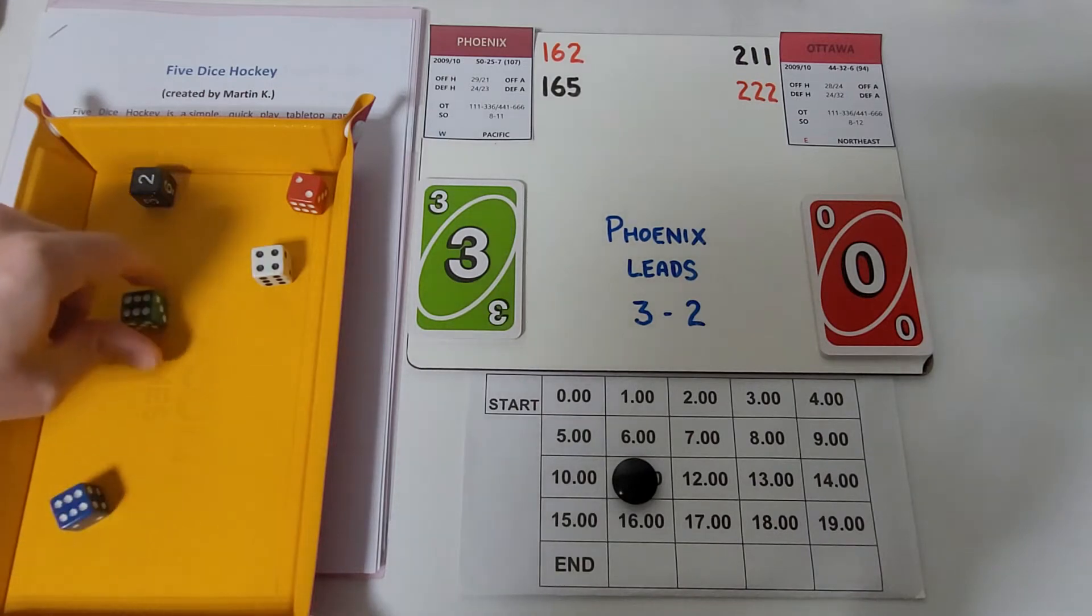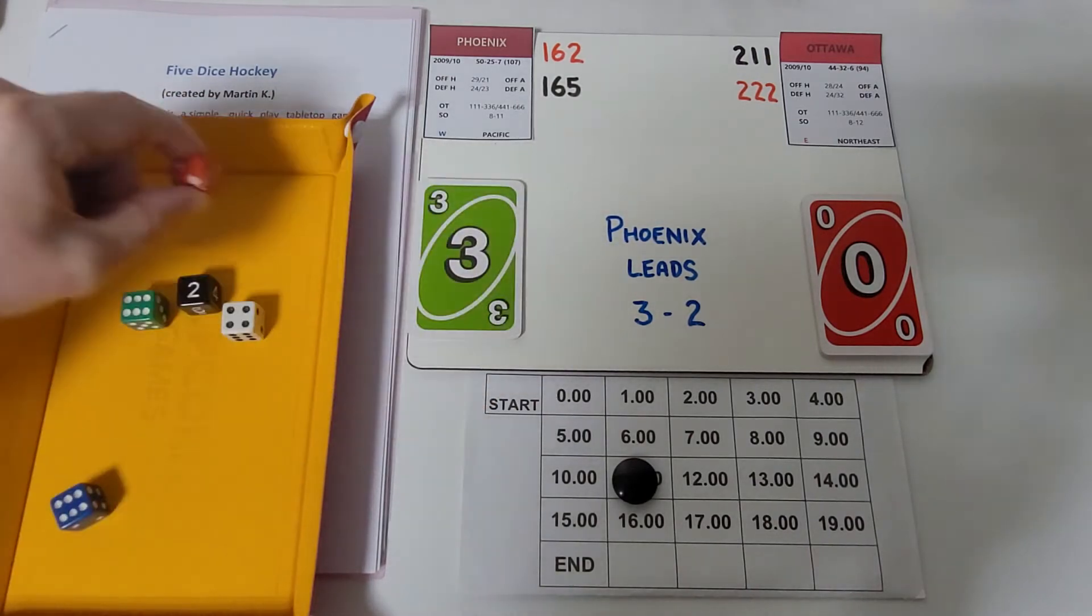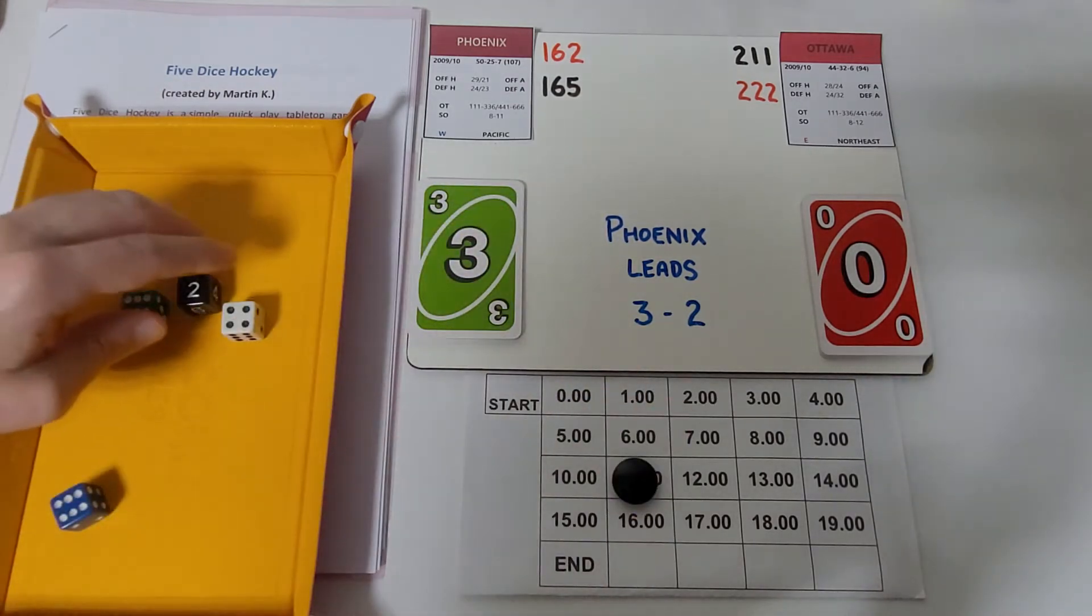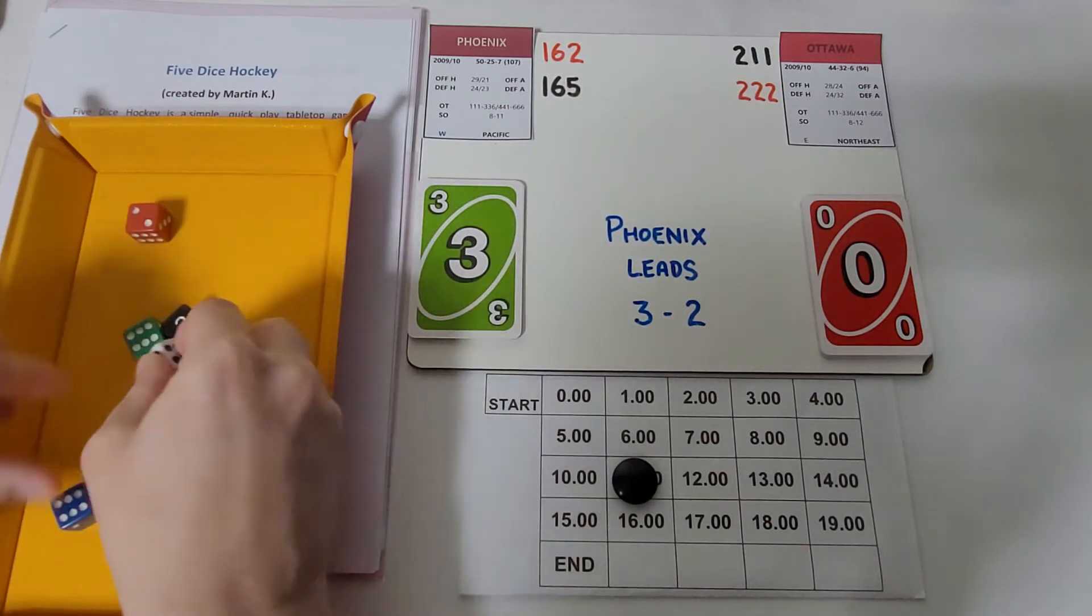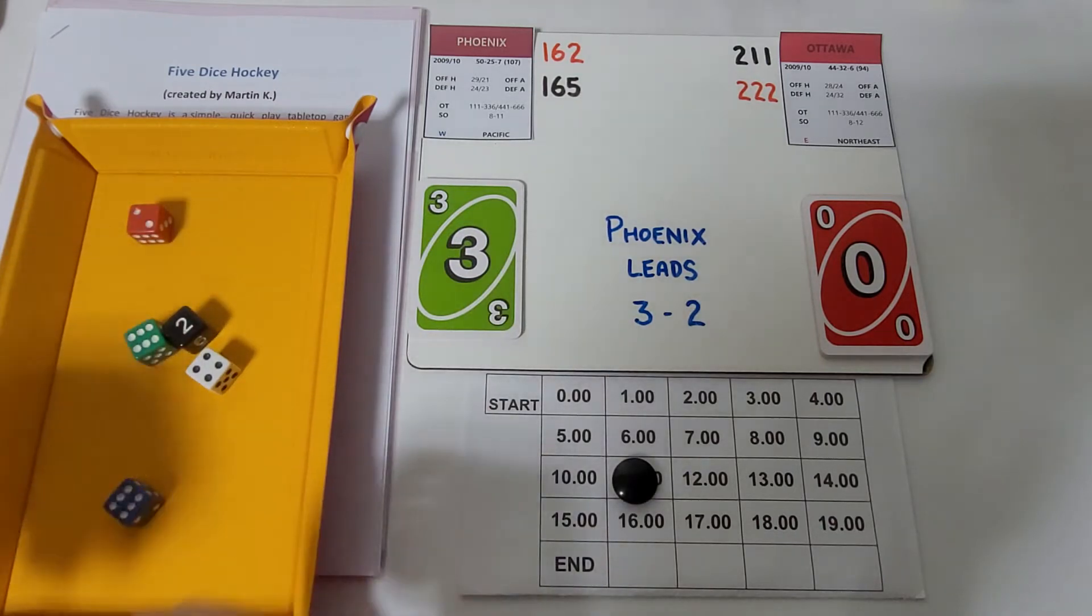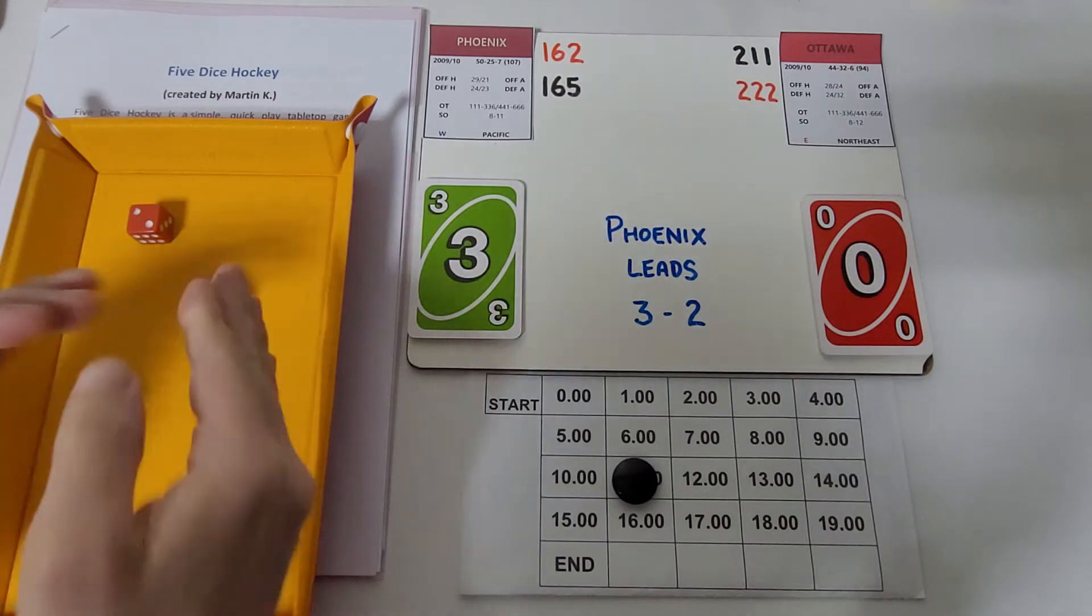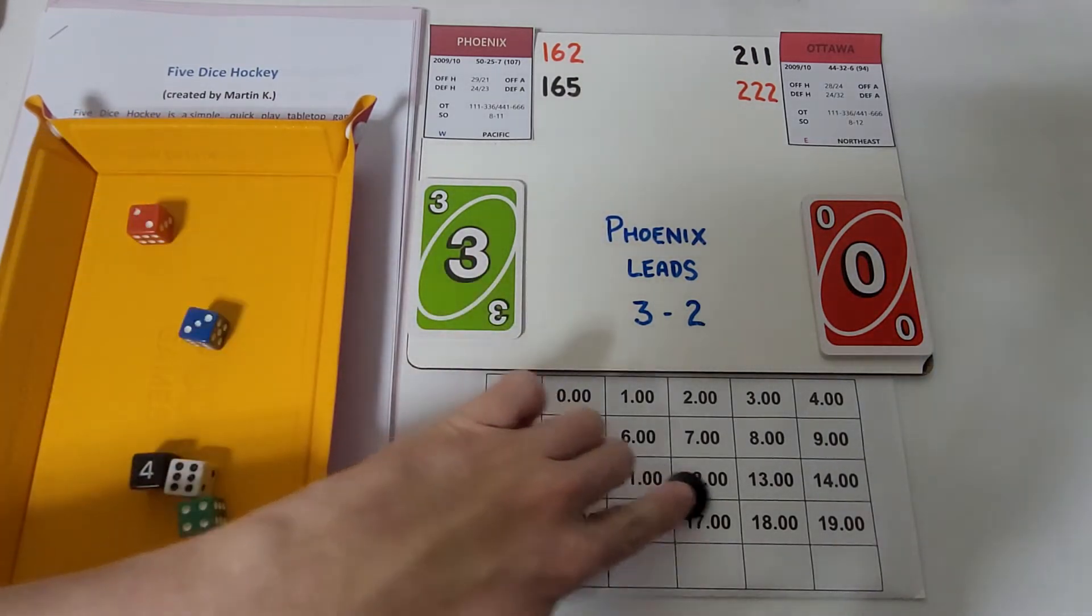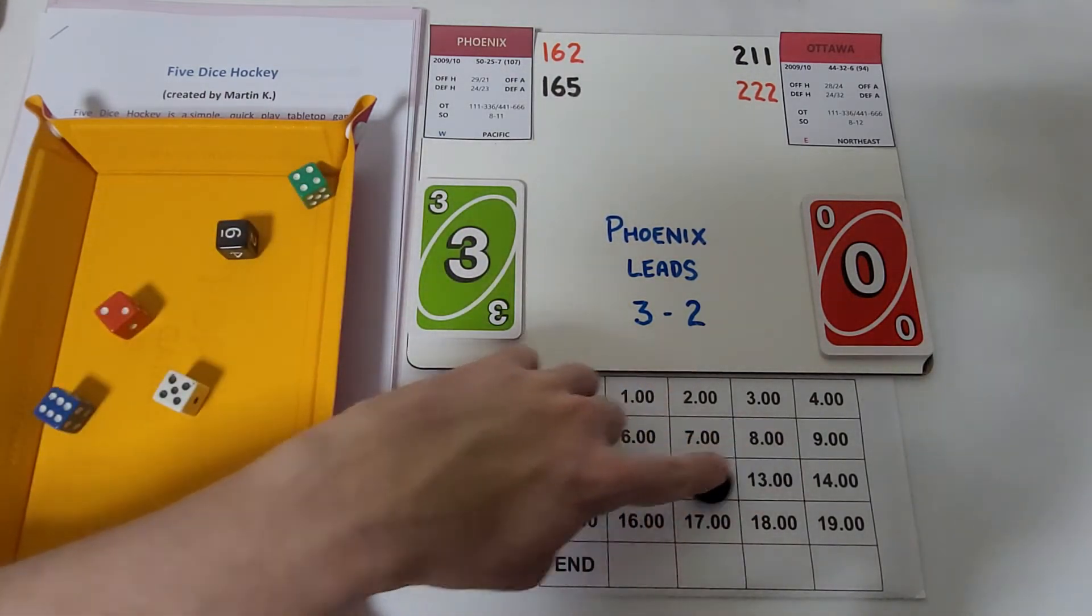3-0 Phoenix, we are barely seven minutes into it. This could be over fast. We get a turnover here with a 624 and Phoenix, so this is a chance for Ottawa to finally get on the board before they get too far behind.